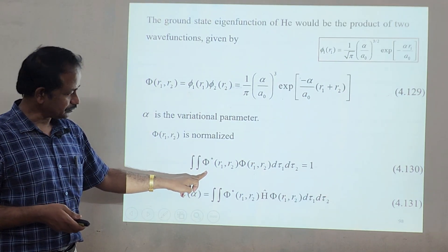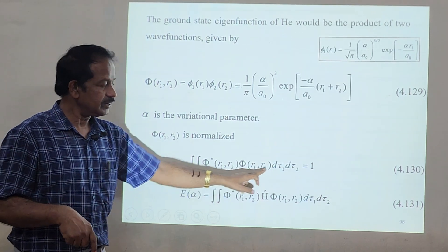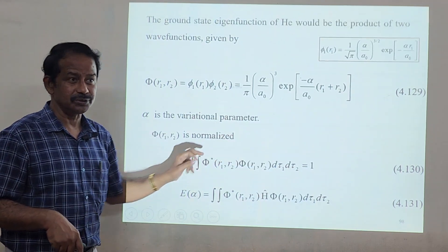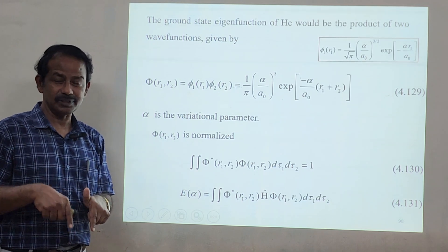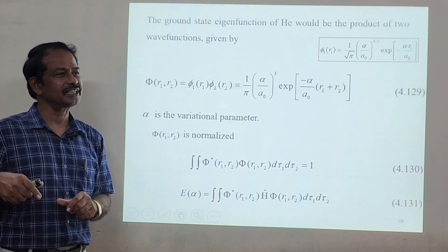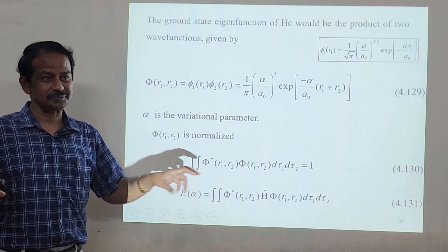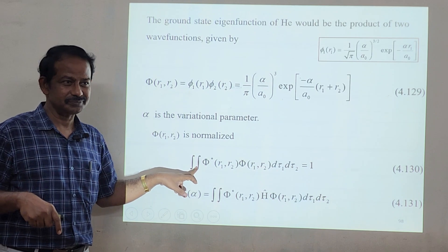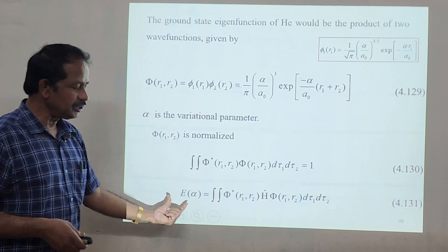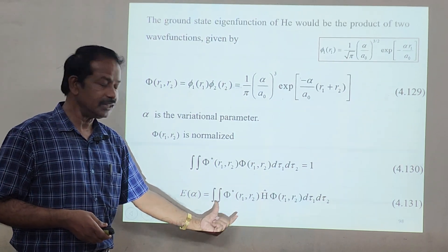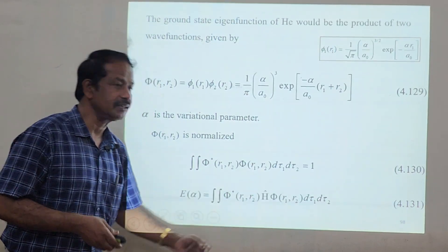We know the normalization condition: the integral of phi-star times phi over d-tau-1 d-tau-2 equals 1, where d-tau-1 stands for dx1 dy1 dz1. This gives us a six-coordinate system, which is very difficult to solve. As usual, the variational principle gives us the Hamiltonian sandwiched between phi and phi-star.